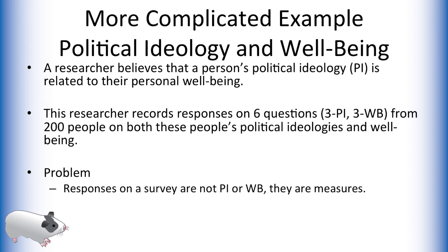Let's try a more complex example. Let's assume that a researcher believes that a person's political ideology is related to that person's well-being. This researcher records the responses of 200 people on 6 questions — 3 for political ideology and 3 for well-being. But there is a problem here, as questions on a survey are not exactly political ideology or well-being. They are just questions. But we can assume that something about an individual's responses to those questions are influenced by their political ideology and well-being.